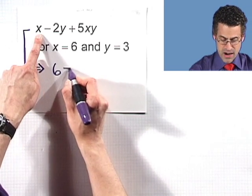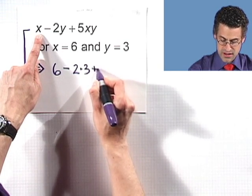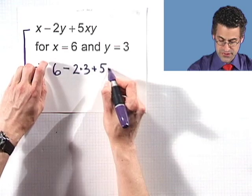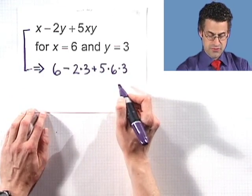six minus two multiplied by three plus five times six times three. So now we have to evaluate this.